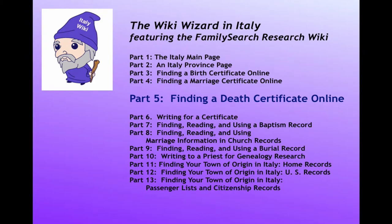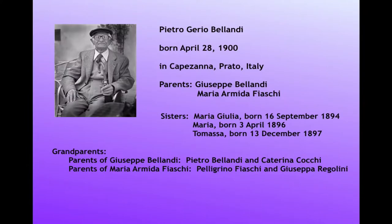This is Part 5 in a series intended to help you use the FamilySearch Research Wiki to find records for your ancestors in Italy. In Parts 3 and 4, we began developing a case study into the family of Pietro Guerrio Bellondi.